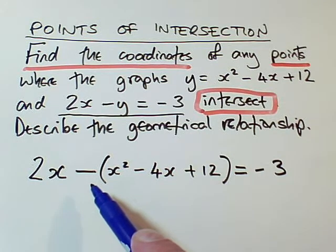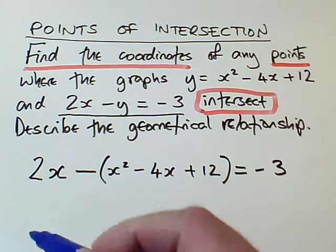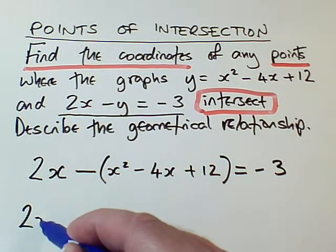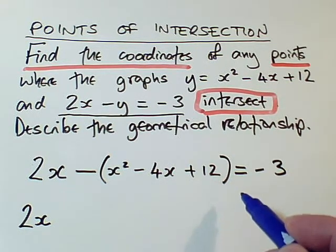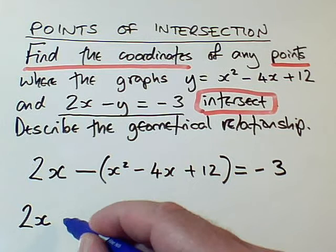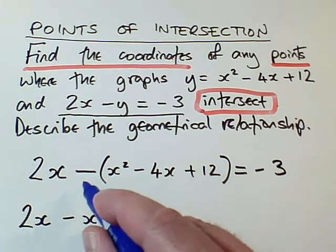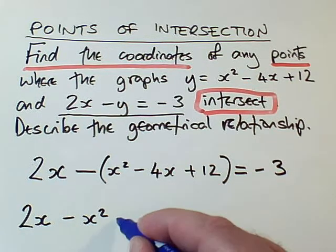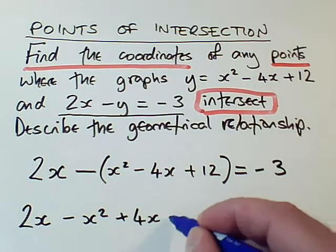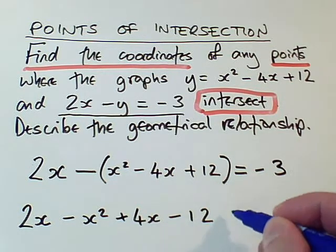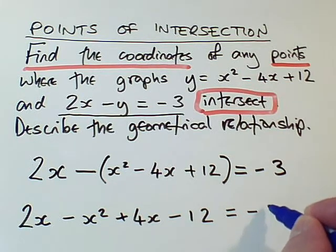My first step has got to be to remove these brackets. The 2x is unaffected, but this minus means I'm doing minus 1 times each term in the brackets. Minus 1 times x² is -x². Minus 1 times -4x is +4x. Minus 1 times +12 is -12. And I mustn't forget the equals -3.